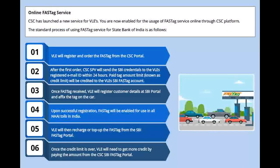The standard process of using FASTag service for State Bank of India is as follows: the VLE will register and order the FASTag from the CSC portal. After the first order, CSC SPV will send the SBI credentials to the VLE's registered email ID within 24 hours. The paid tag amount limit, known as credit limit, will be credited to the VLE's SBI FASTag account. Once the FASTag is received, the VLE will register customer details at the SBI portal and affix the tag on the car. Upon successful registration, the FASTag will be enabled for use in all NHAI tolls in India. The VLE will then recharge or top up the FASTag from the SBI FASTag portal.